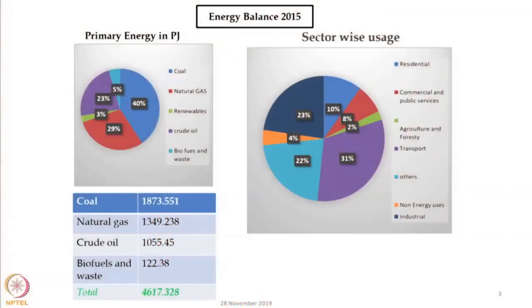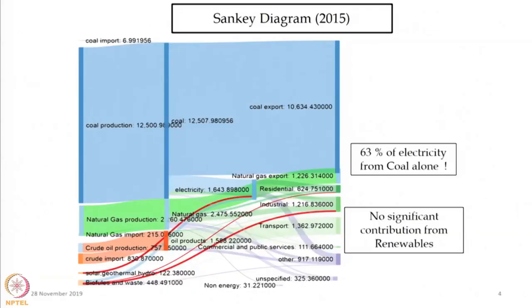When we talk about energy, 40 percent of energy is consumed from coal and 29 percent comes from natural gas. But the amount of renewable energy is very, very less. Sector-wise, the transportation and industry sectors consume more energy. From the Sankey diagram, it is clear that coal production has the lion's share, and next we have natural gas. It is observed that 63 percent of electricity comes from coal alone and there is no significant contribution from any renewable energy sources.